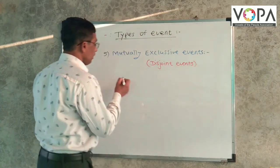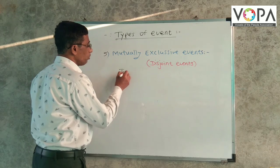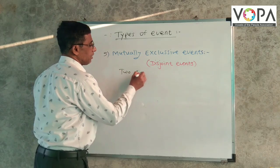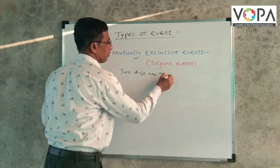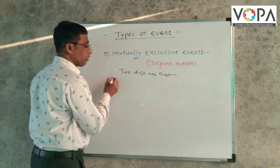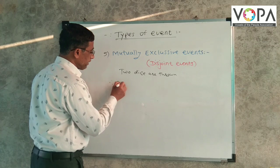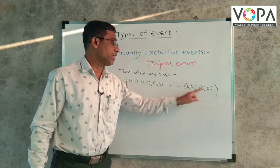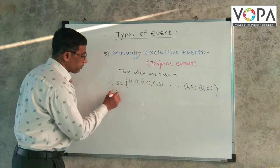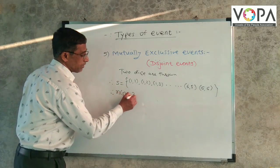For example, two dies are thrown. What we get? Therefore, sample space S is equal to (1,1), (1,2), (1,3), up to (6,5), (6,6) means total number of sample space n(S) is equal to 36.